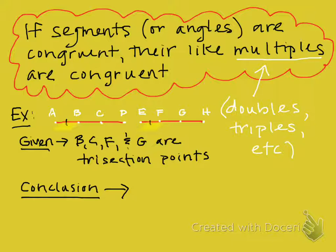It also says that BC, F, and G are trisection points. So on AD, because BC are trisection points, now we know that the three smaller segments are also congruent to segment AB. And the same thing is true for the other segment. Because F and G are trisection points, we know now that the three smaller segments are all congruent, which means they're congruent to EF.